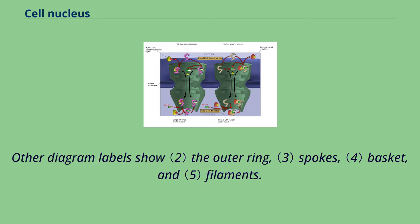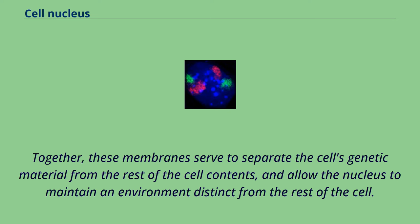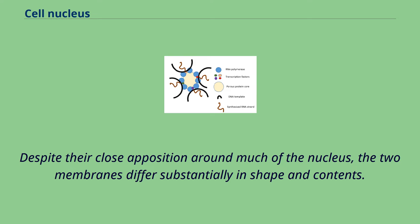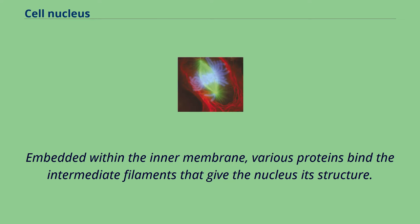The nuclear envelope consists of two membranes: an inner and an outer nuclear membrane. Together, these membranes serve to separate the cell's genetic material from the rest of the cell contents, and allow the nucleus to maintain an environment distinct from the rest of the cell. Despite their close apposition around much of the nucleus, the two membranes differ substantially in shape and contents. The inner membrane surrounds the nuclear content, providing its defining edge. Embedded within the inner membrane, various proteins bind the intermediate filaments that give the nucleus its structure.